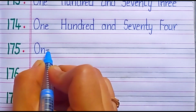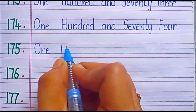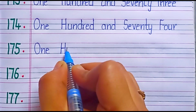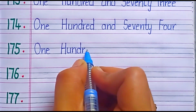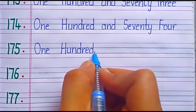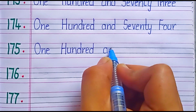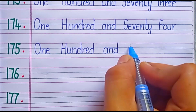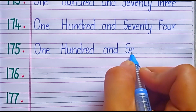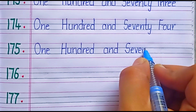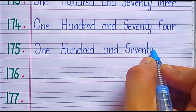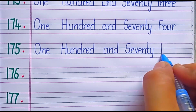One hundred and seventy five. One hundred and seventy five: S-E-V-E-N-T-Y, 70, F-I-V-E, 5. 75.